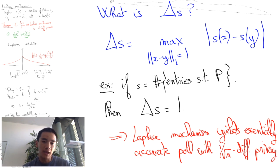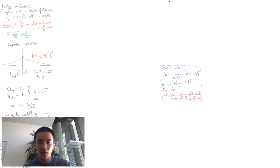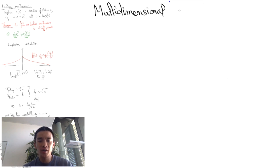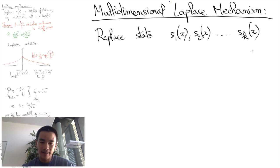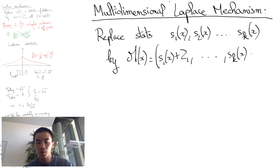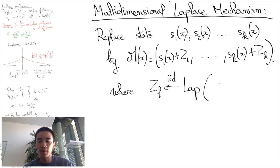Now, our basic Laplace mechanism here can actually be generalized to the multidimensional case. Say you want to return several statistics, i.e., S of X is now a vector in R to the K. Then the Laplace mechanism now consists of adding independent Laplace noises to all components, i.e., M of X is equal to S1 of X plus Z1, S2 of X plus Z2, and so on, and SK of X plus ZK, where the ZK are IID random variables drawn from Laplace distribution with parameter B equals to delta S divided by epsilon.